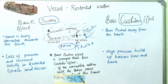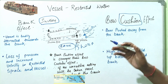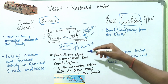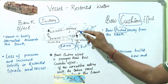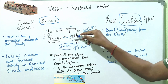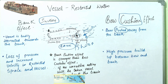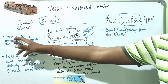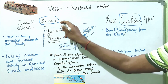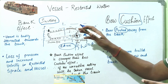Now we will discuss bank suction and bow cushion. When the bow is pushed away from the bank, this is known as bow cushion effect. When the vessel is bodily attracted towards the bank, this is known as bank suction effect.